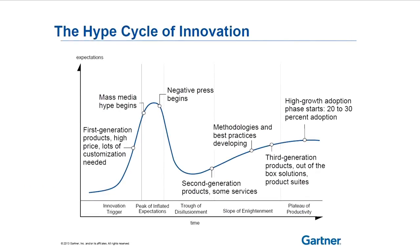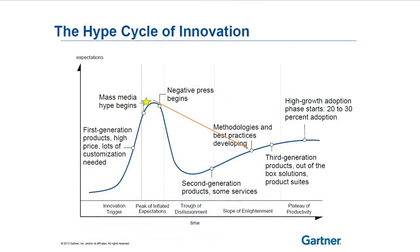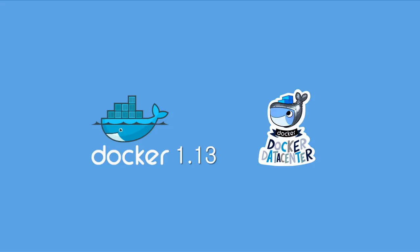Our goal is to address what Gartner calls the hype cycle of innovation. They believe containerization is currently at the peak of inflated expectations — every CIO and CTO has something on their desk about needing to containerize everything. We think it's the right move. But we want to make it easier so we get out of the trough of disillusionment phase. Docker and Microsoft are working very hard to make these technologies easier to implement, deploy quickly, and get solutions to market as fast as possible, bringing you to the slope of enlightenment.